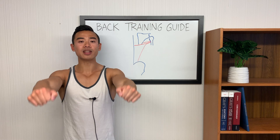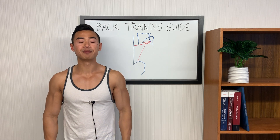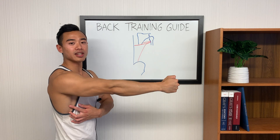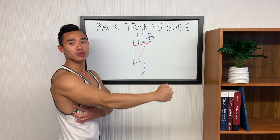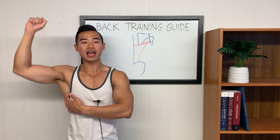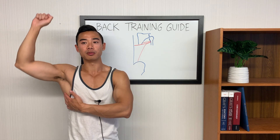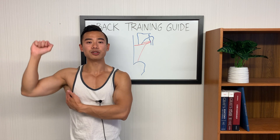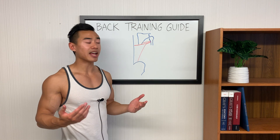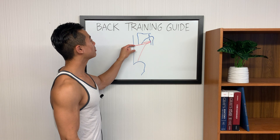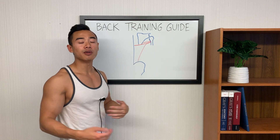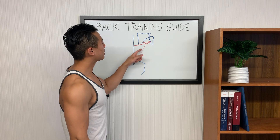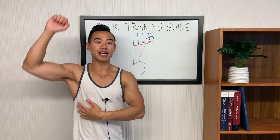Looking at the anatomy tells us about the function of these muscles. The main functions are to extend the arm — bringing the arm down like this — and to adduct the arms, which means to bring the arms down to the middle. We achieve extension of the arm through rowing movements, and we get adduction when we do vertical pulling movements. The upper fibers of the lats are more involved with shoulder extension, bringing the arms back, whereas the lower fibers are more involved with shoulder adduction.